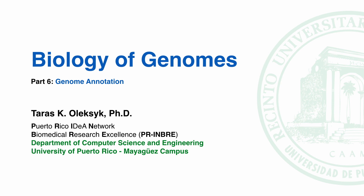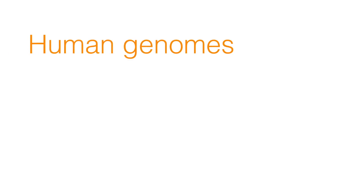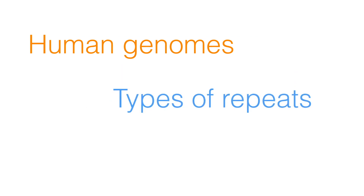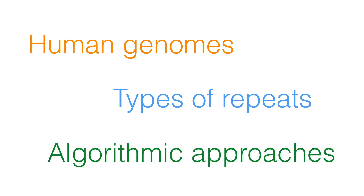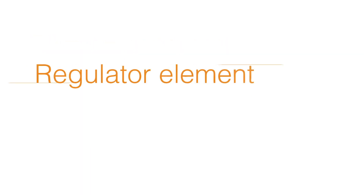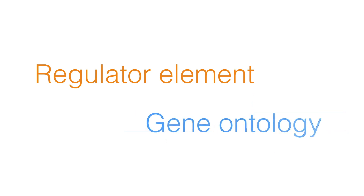Welcome to the Genome Annotation Lecture. At the end of this lecture, you should be able to understand how much of the human genome stands for protein coding genes, identify the types of repeats that can be found in eukaryotic genomes, explain how and when you could use algorithmic approaches for gene annotations, and know how to find the regulatory elements in the human sequence, and explain what is gene ontology.